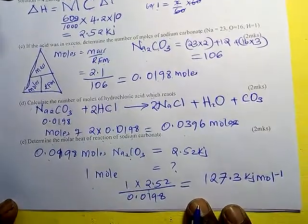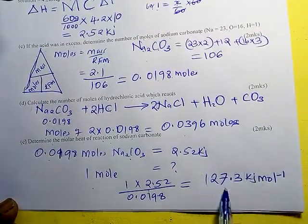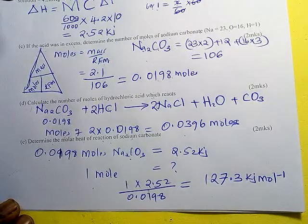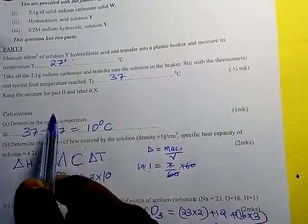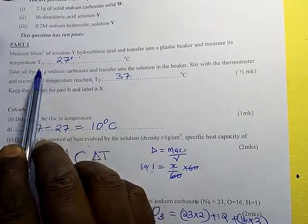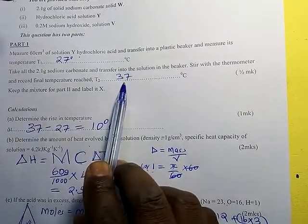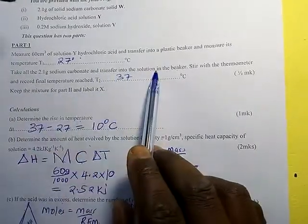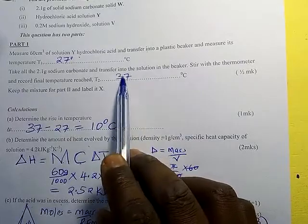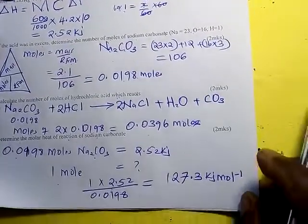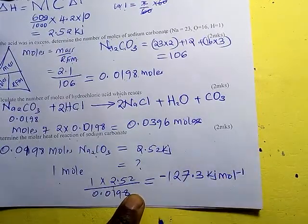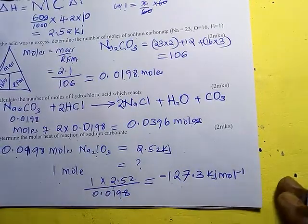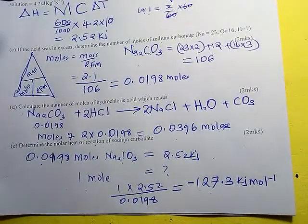If you leave the answer as 127.3 kJ/mol without indicating the type of reaction, that is wrong. The temperature increased from 27°C to 37°C, which means the reaction is exothermic — it releases heat. Therefore, you must indicate the heat change as negative: ΔH = −127.3 kJ/mol.